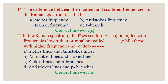The correct answer for question 1 is C, Raman frequency. In Raman spectrum, lines scattered at right angles with frequency lower than the original are called Stokes lines, while those with higher frequency are called anti-Stokes lines. The difference between incident and scattered light frequency is the Raman frequency, associated with Stokes lines.